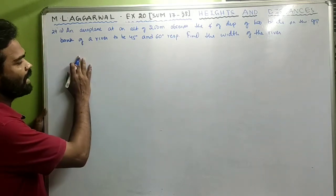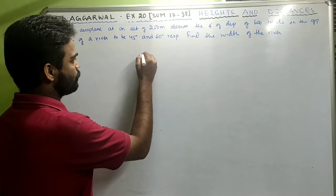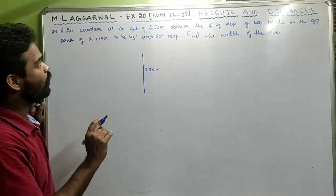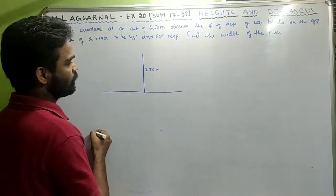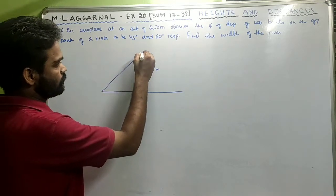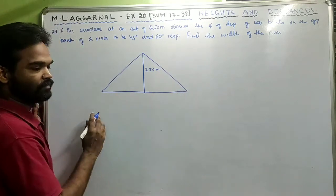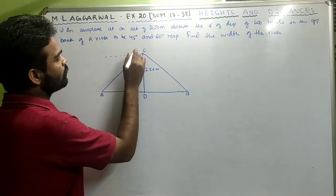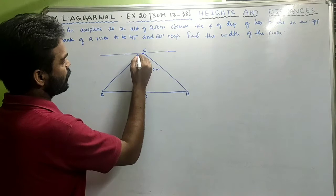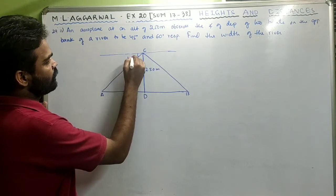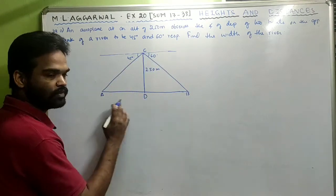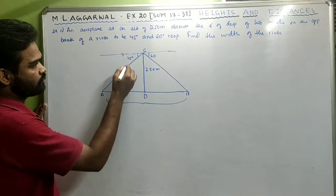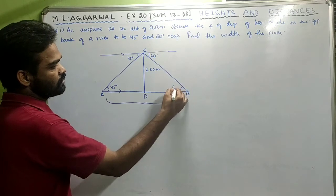Sum 29 part 2: An aeroplane flying at an altitude of 250 meters observes angles of depression of two boats on the opposite bank of a river as 45 degrees and 60 degrees. In triangle ADC, tan 45 = CD/AD, so 1 = 250/AD, giving AD = 250 meters. In triangle DCB, tan 60 = DC/DB, so √3 = 250/DB, giving DB = 250/√3 = 250√3/3 ≈ 144.34 meters.